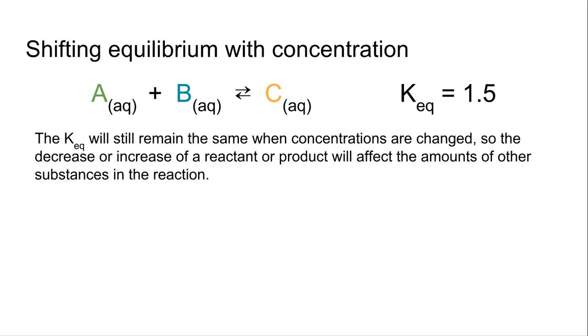So the first one is shifting equilibrium with concentration. We have a chemical equation up here, A plus B yields C, and has a Keq equal to 1.5. Basically, when you change with concentration, the Keq is still going to remain the same. So an increase or a decrease of a reactant or a product will affect the amounts of the other substances in the reaction.